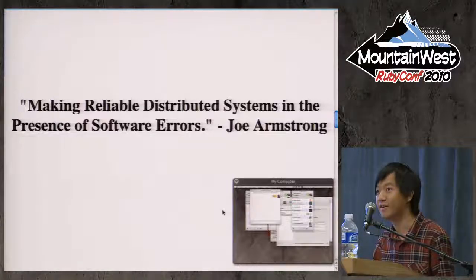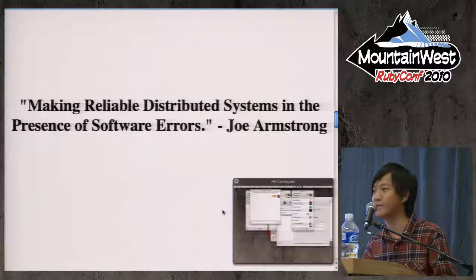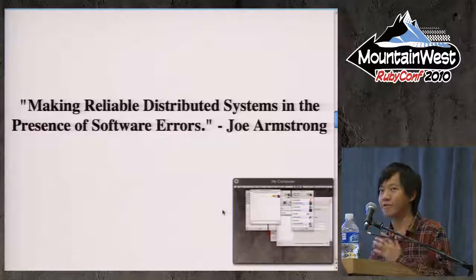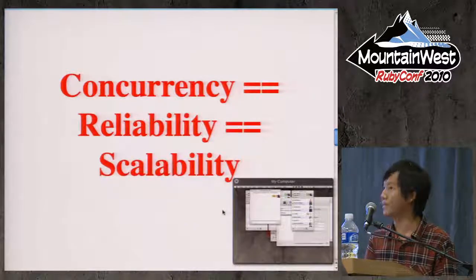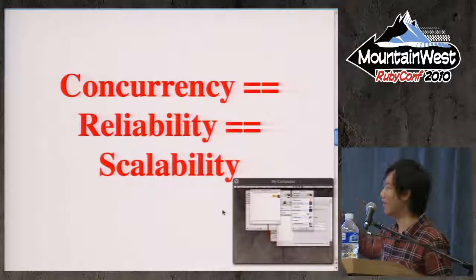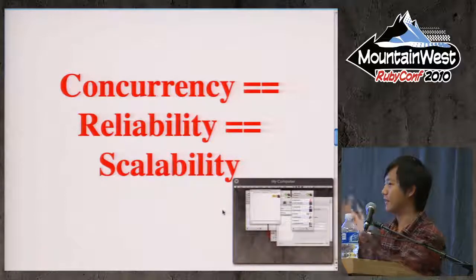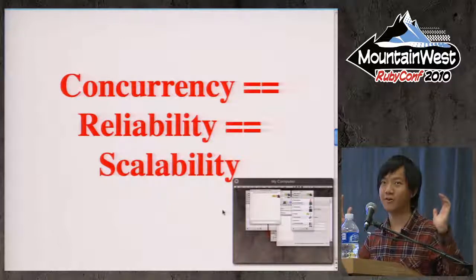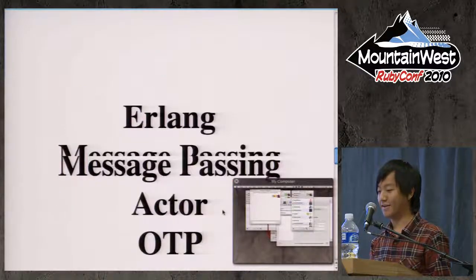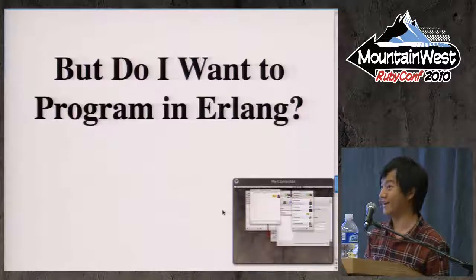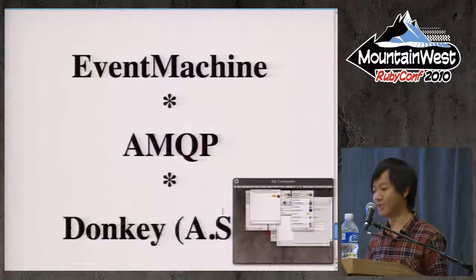Turns out concurrency, reliability, and scalability are exactly the same thing — if you get one, you get all the others. Erlang is a story about how you get concurrency from a three-legged stool — if you miss one leg, you don't get any other. Either you buy the story or not. But do I really want to program Erlang? Not really. We can steal from Erlang — just get the ideas from Erlang — and use EventMachine, AMQP, and Donkey. ASS stands for Asynchronous Server Service.